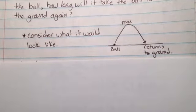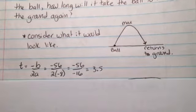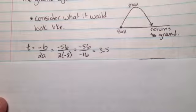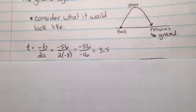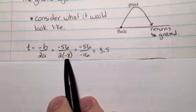So here we go: t = -b/2a. The opposite of b is -56, and the a value is -8.